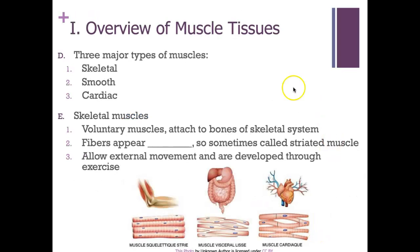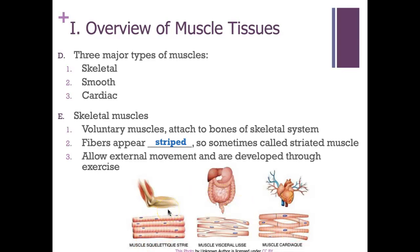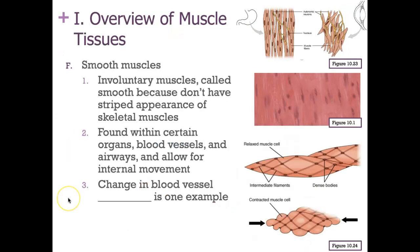There are three major types of muscles: skeletal, smooth, and cardiac muscle. We are going to focus on skeletal muscle in this lecture. Skeletal muscles attach to bone and are under voluntary, conscious control. Their fibers have a striated appearance — as does cardiac muscle — and skeletal muscle allows for external movement and is developed through exercise.